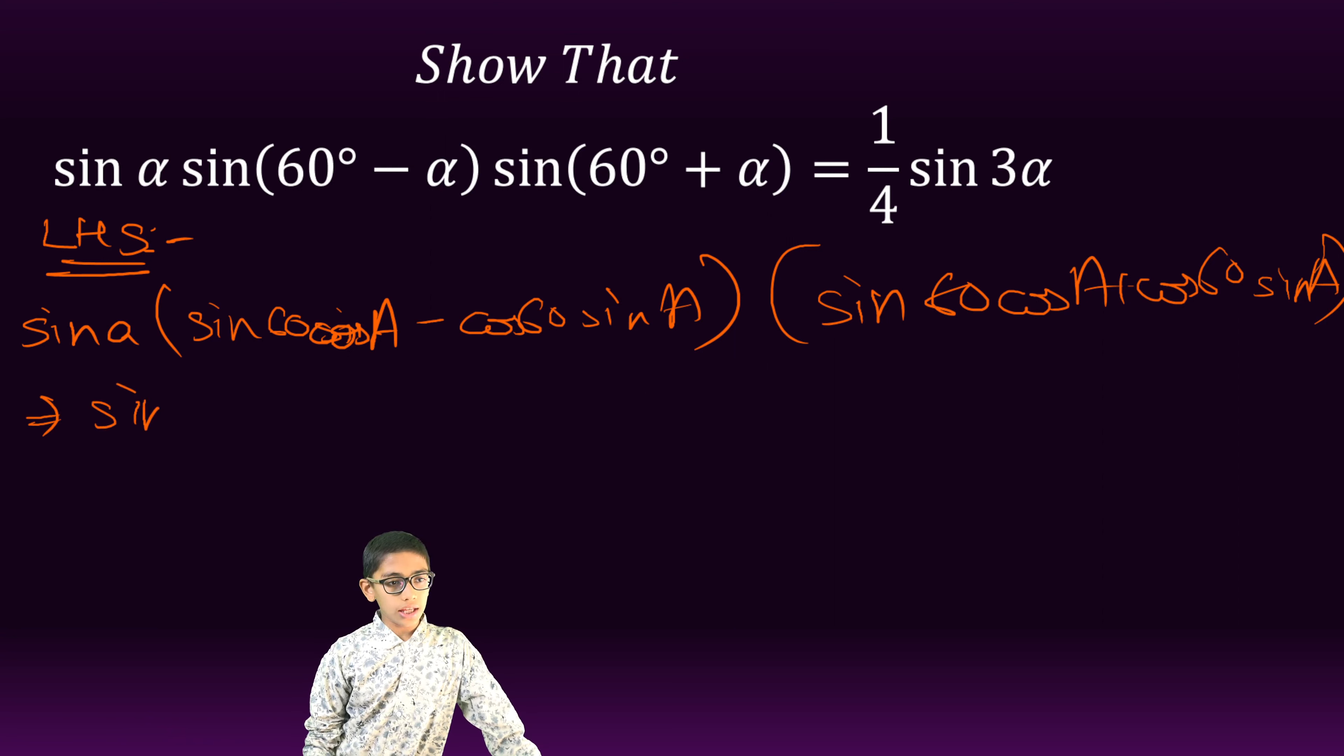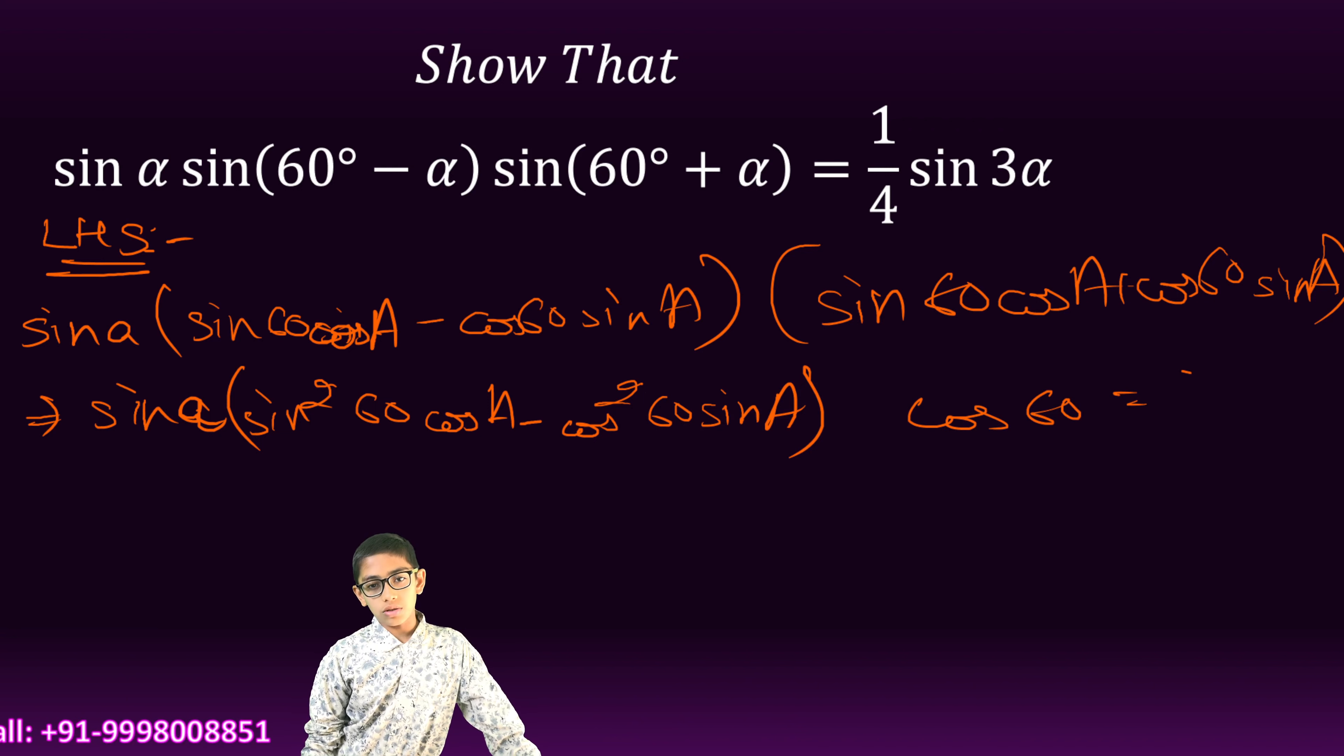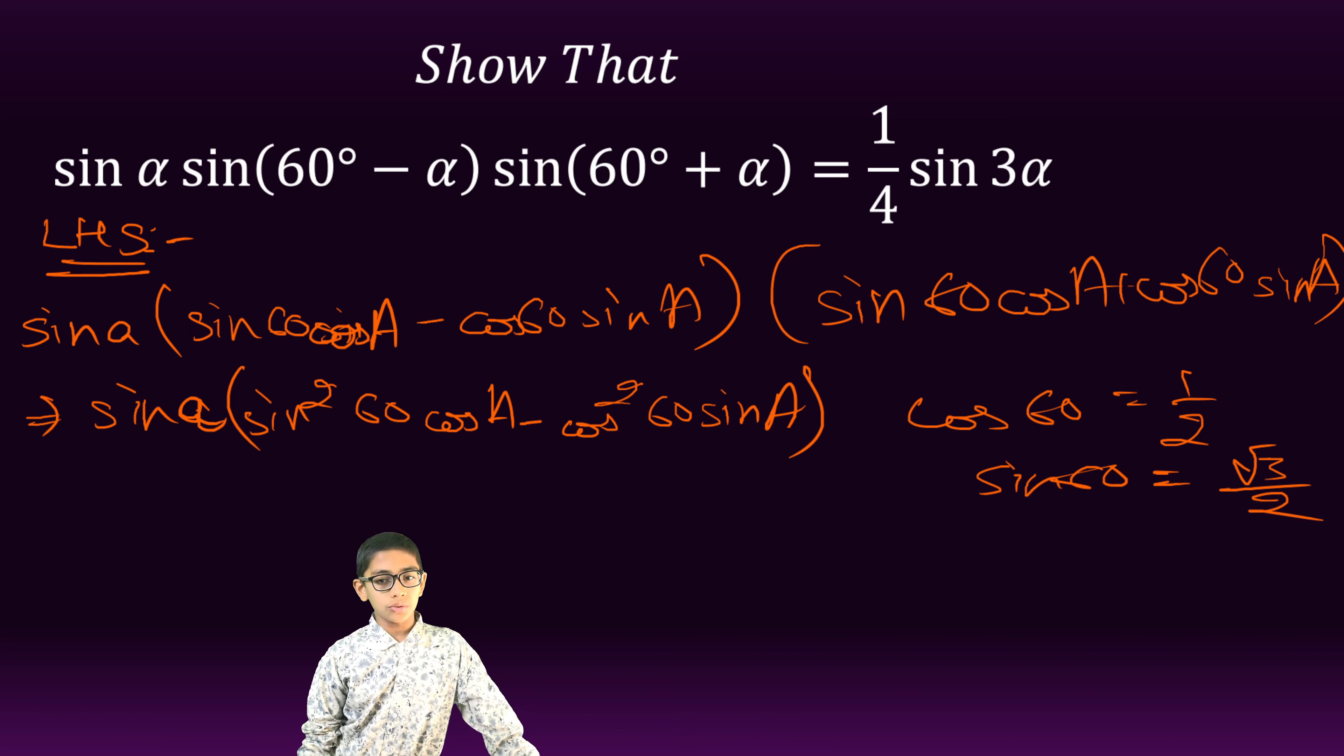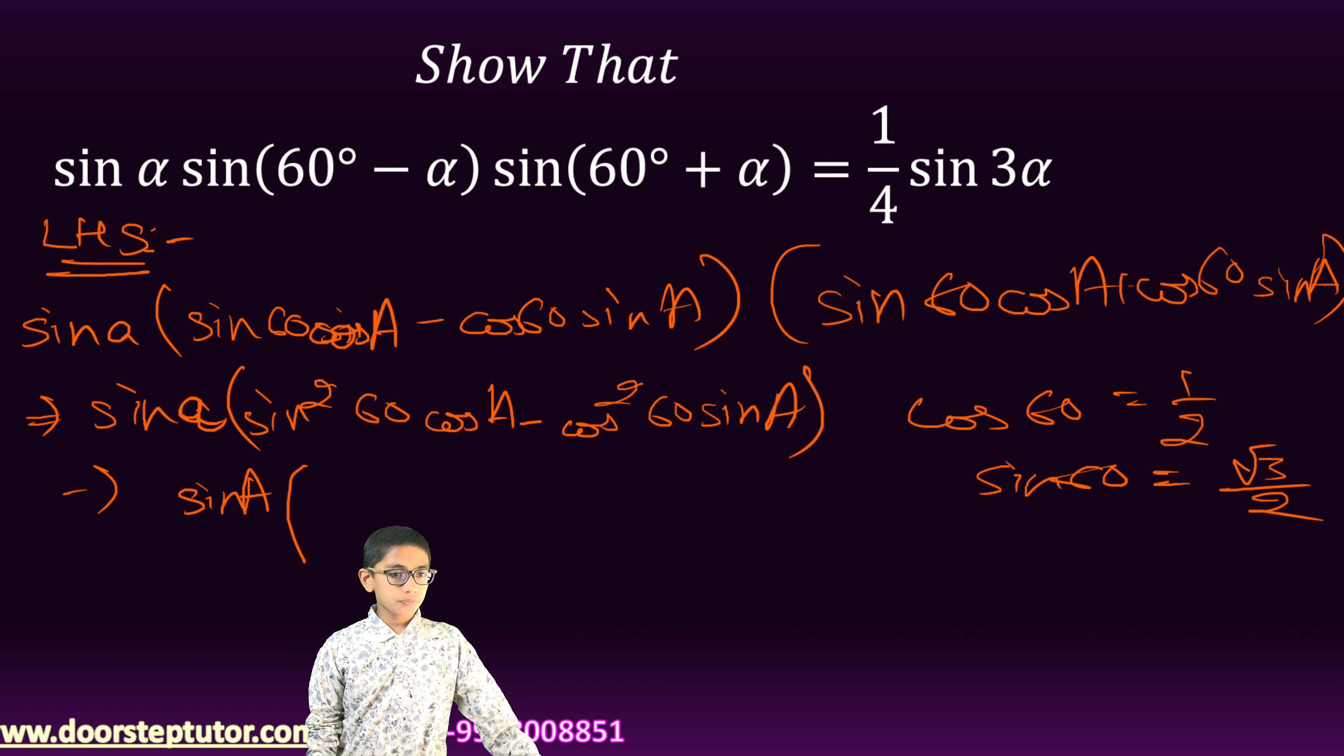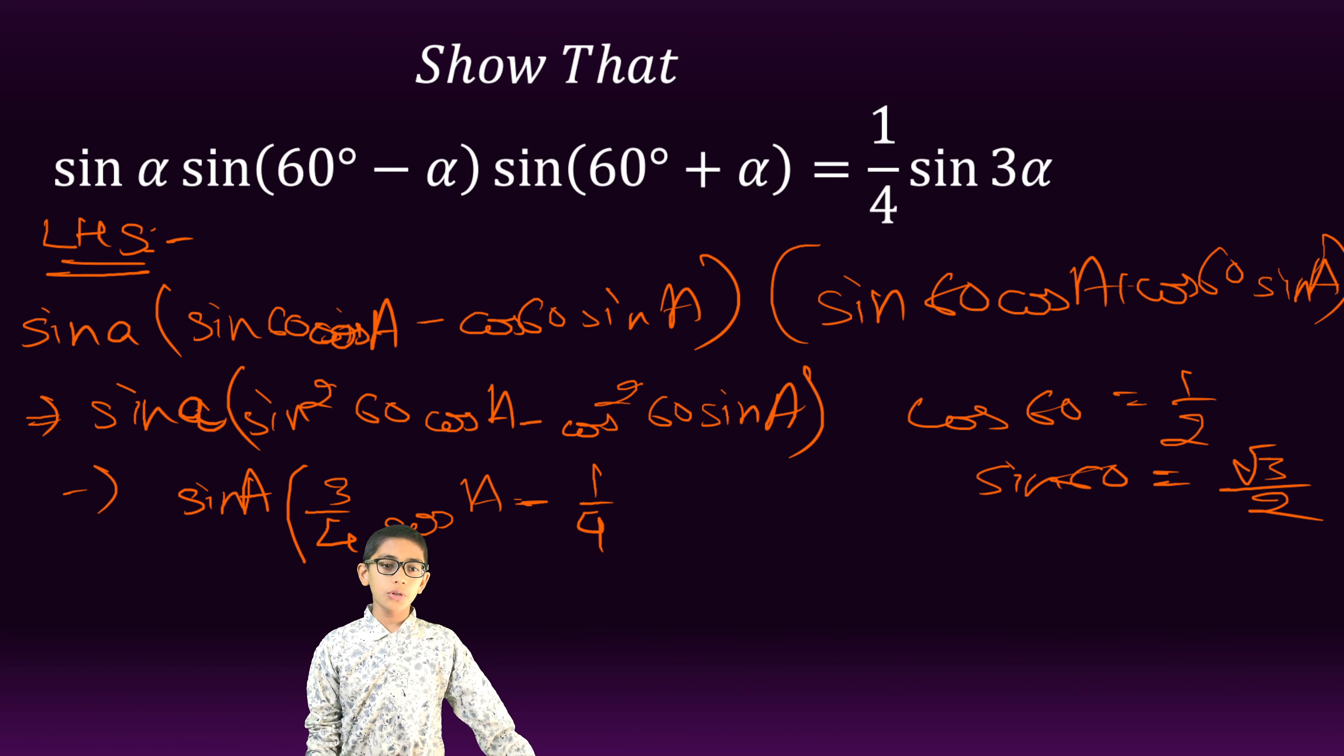This will give us sin A multiplied by sin square 60 cos square A minus cos square 60 sin square A. Since cos 60 is equal to 1 by 2 and sin 60 is equal to root 3 by 2, we will get sin A multiplied by 3 upon 4 cos square A minus 1 upon 4 sin square A.